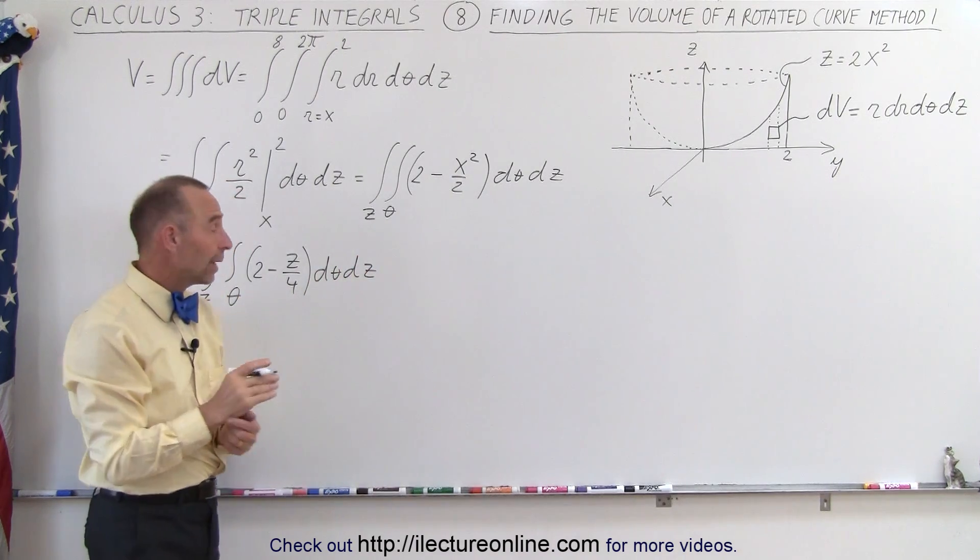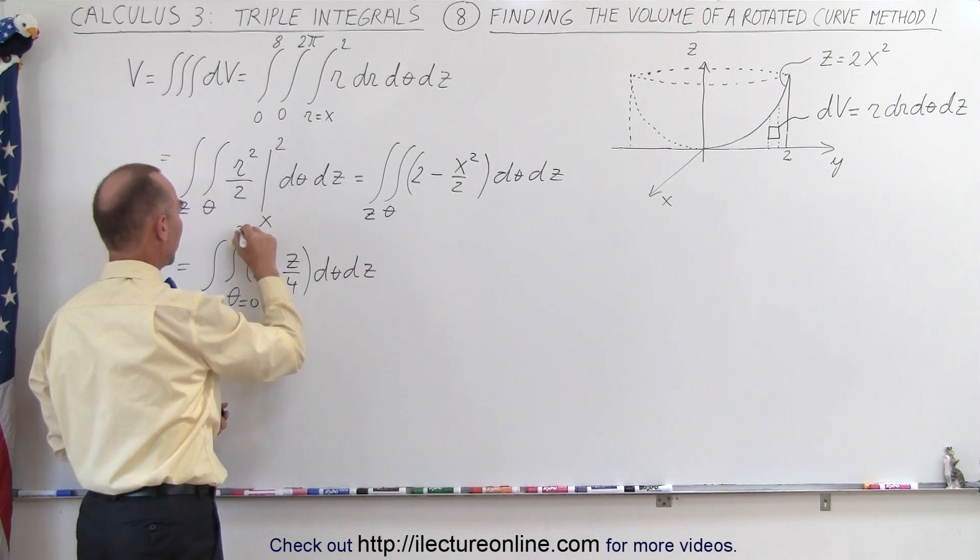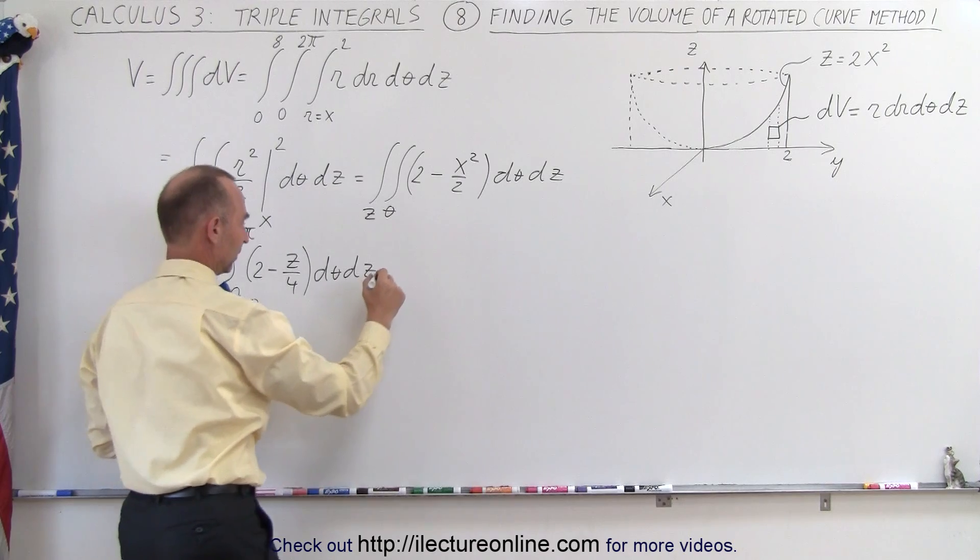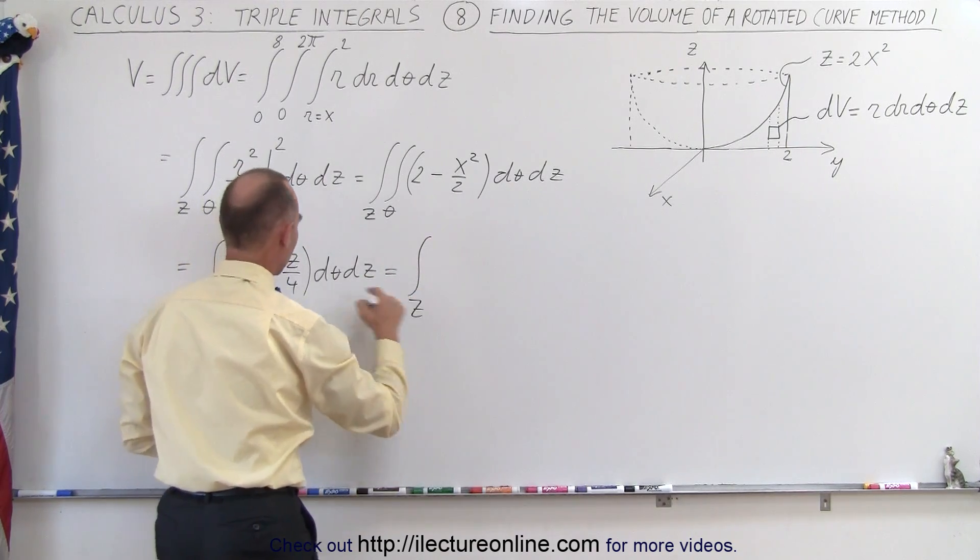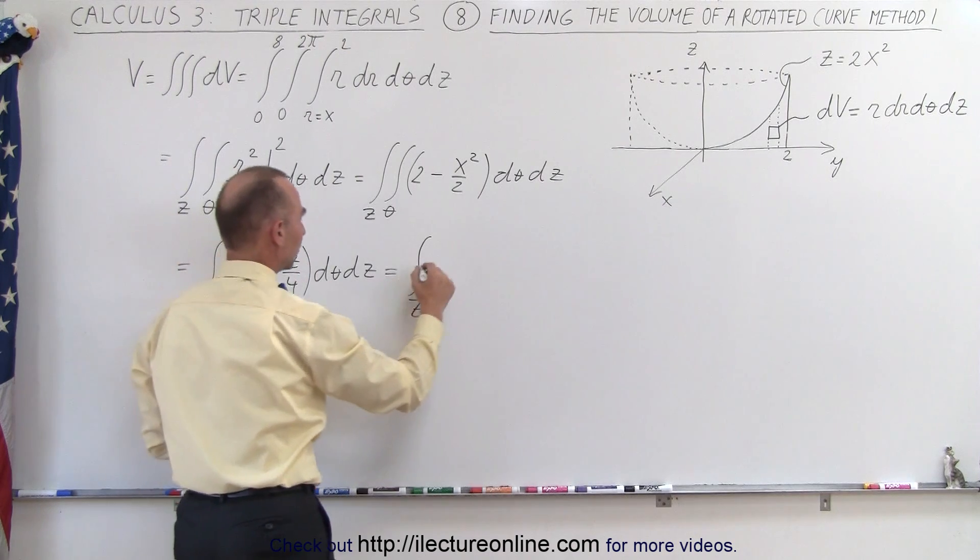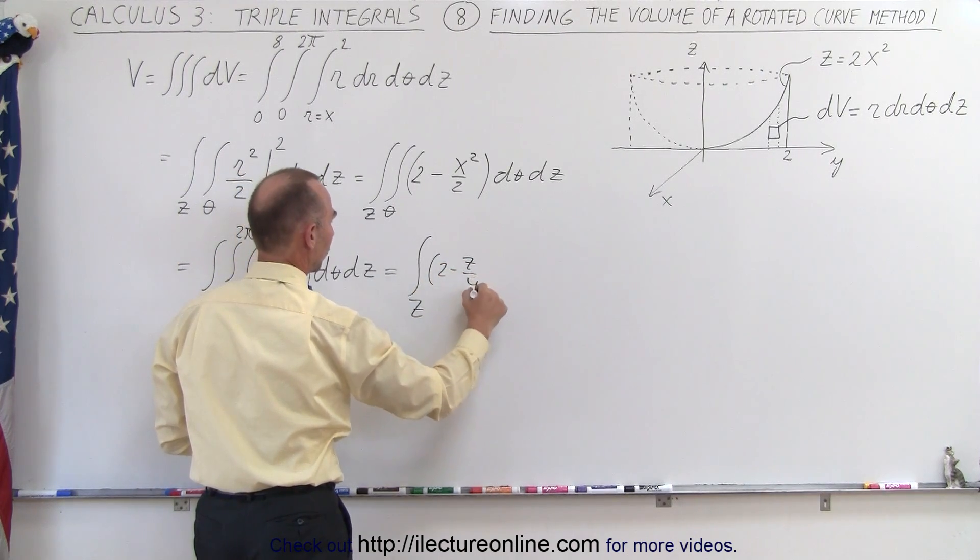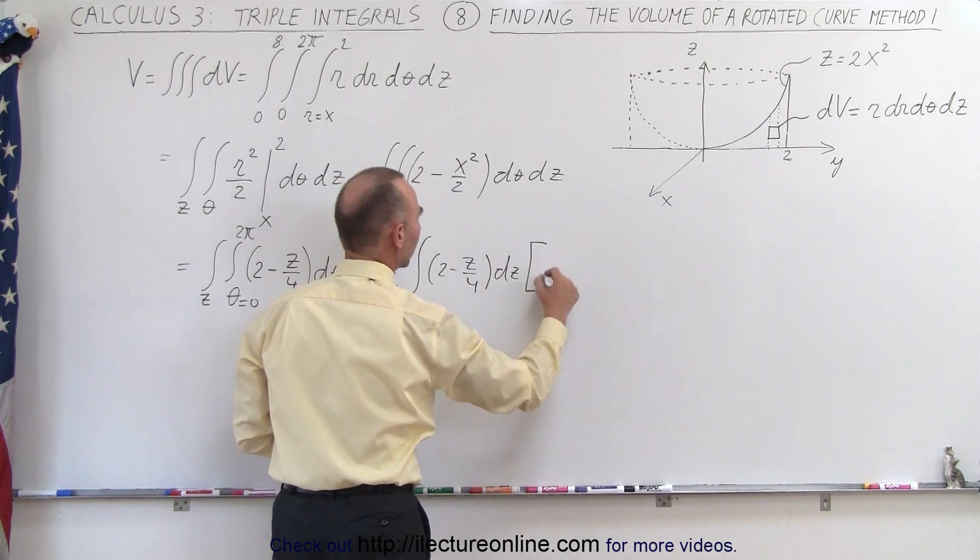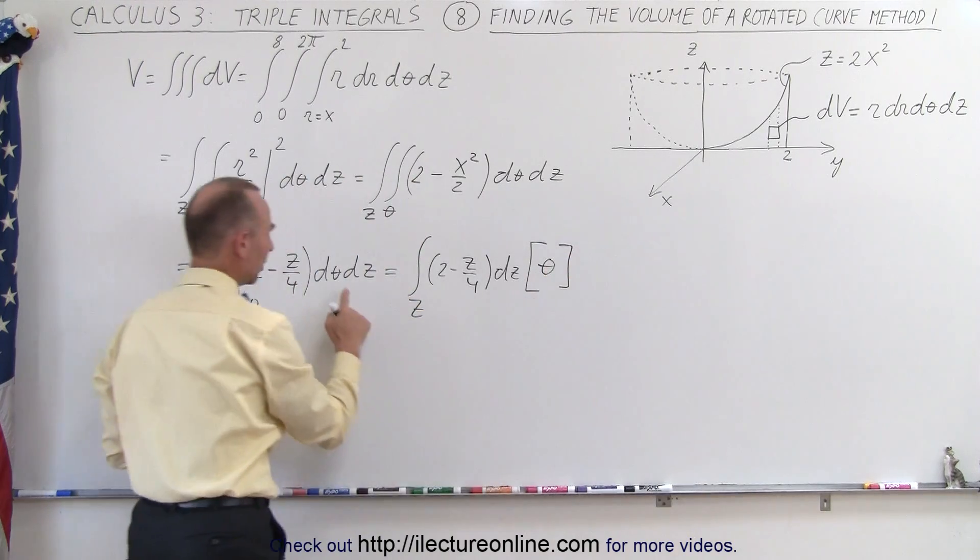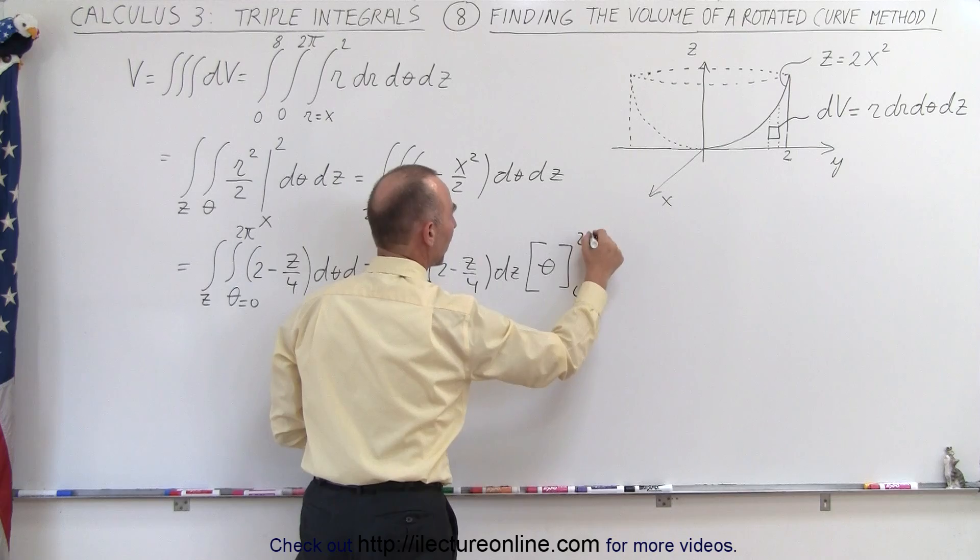Now next we can integrate over the angle. That's easy because the angle θ goes from 0 to 2π, and so that means that this becomes equal to the single integral over z that will remain. This will just be considered a constant, so this becomes 2 minus z over 4, and then we have dz here, and we end up with θ because when we integrate dθ we get θ evaluated from 0 to 2π.